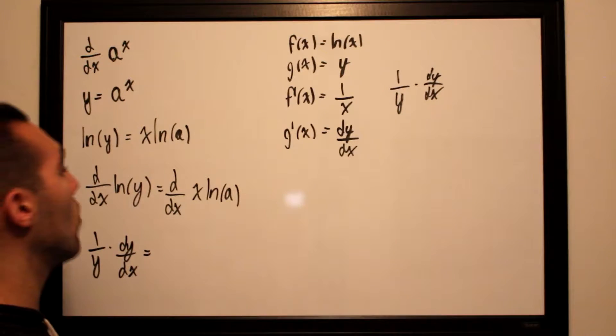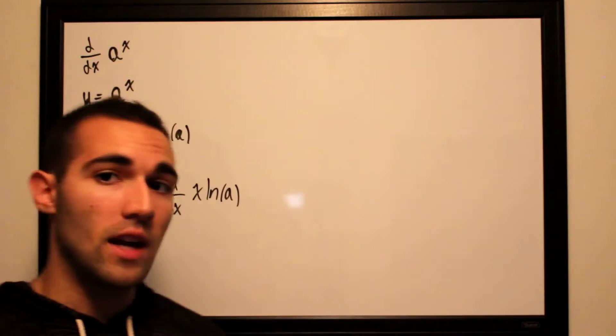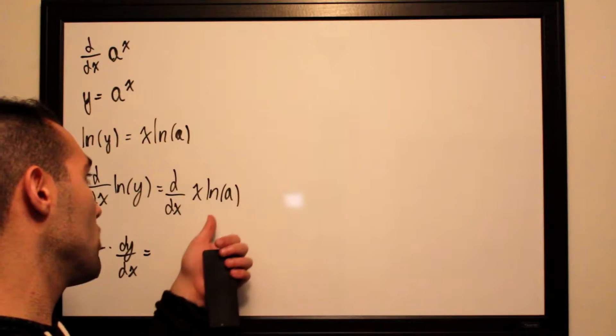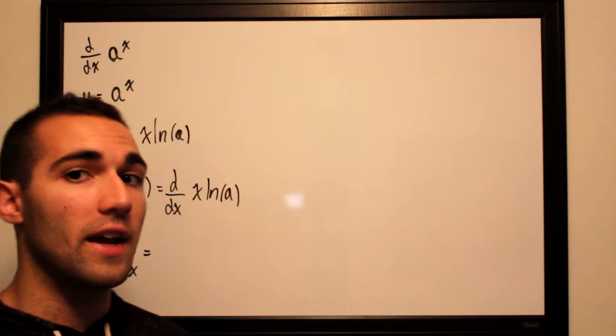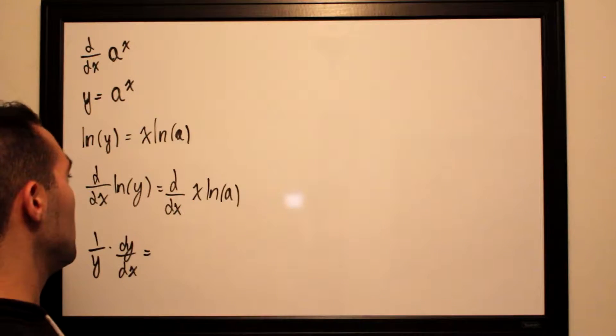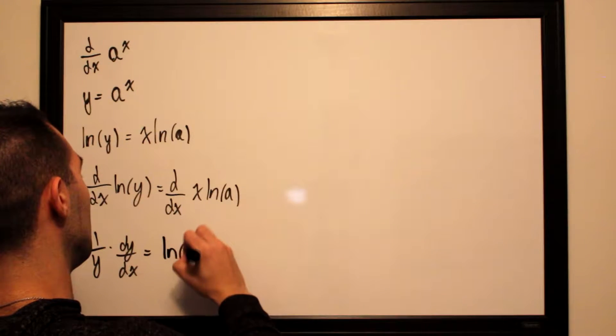Then we take the derivative of x ln(a) with respect to x. Now ln(a) can be treated as any constant. So essentially if we take the derivative of x multiplied by any constant, all we would be left with is that constant itself. So all we would be left with is ln(a).